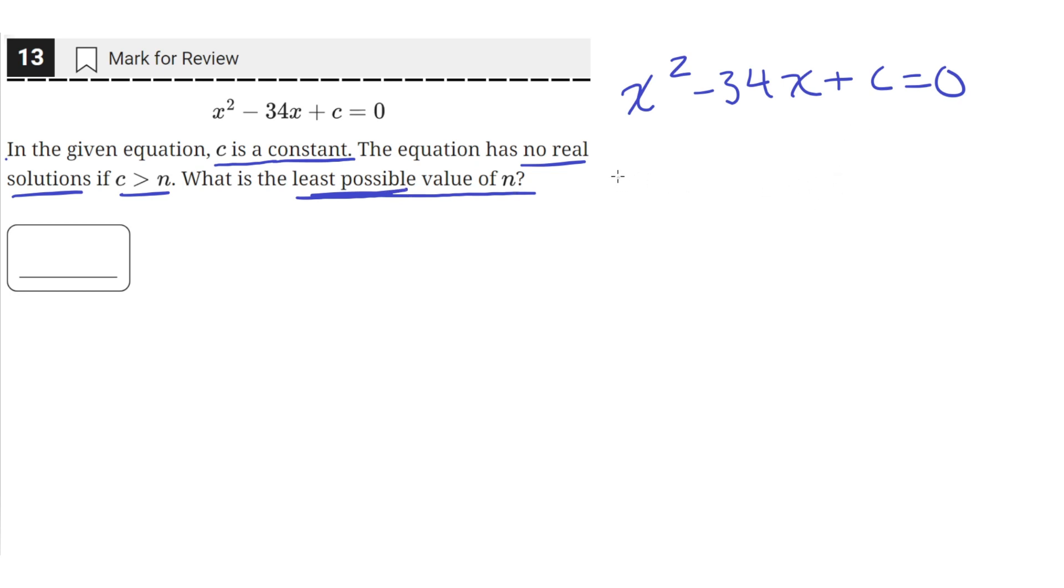So to find the intervals during which the quadratic has no solution, we can find the discriminant, which is equal to b squared minus 4ac.